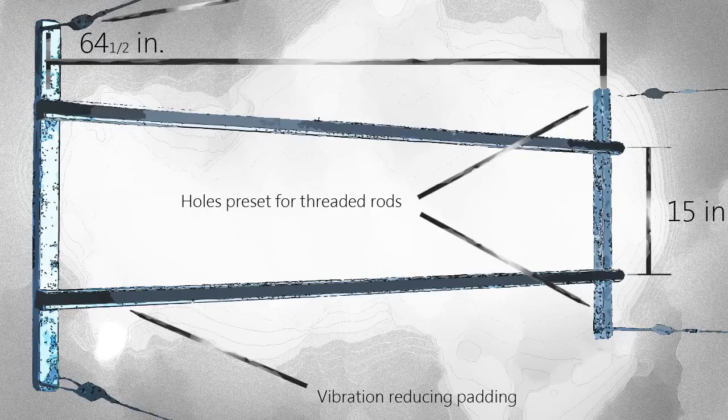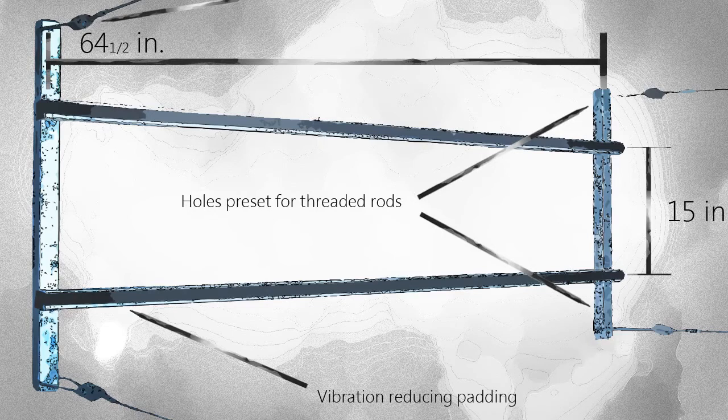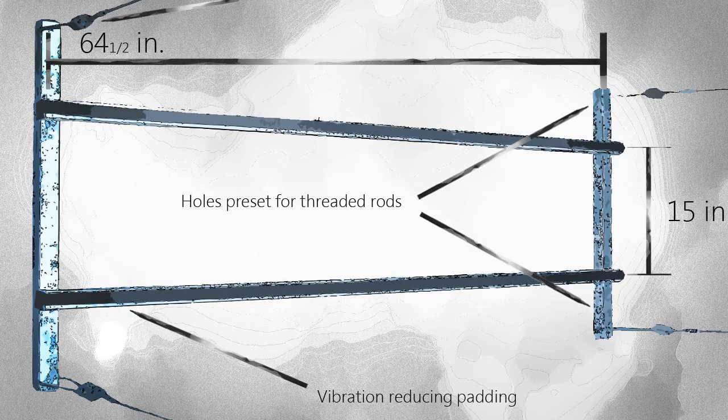For a commercial installation, threaded bars may be used in preset holes located on the arms of the unit. Unit operation is kept quiet with vibration reducing padding.